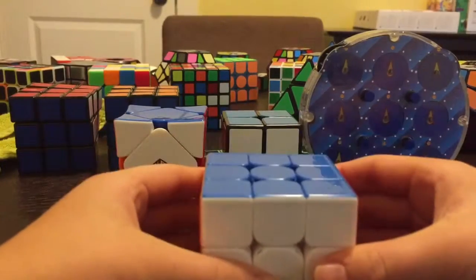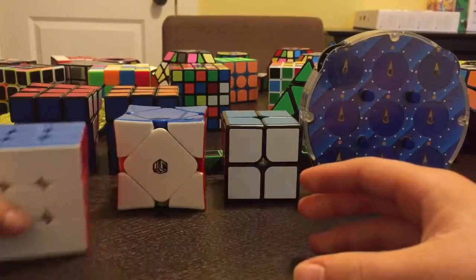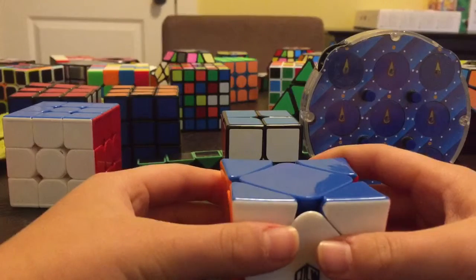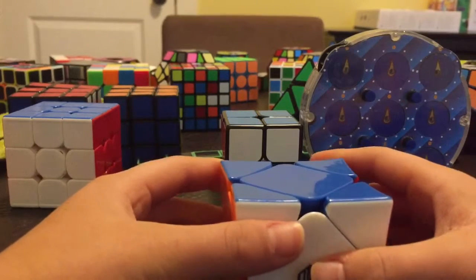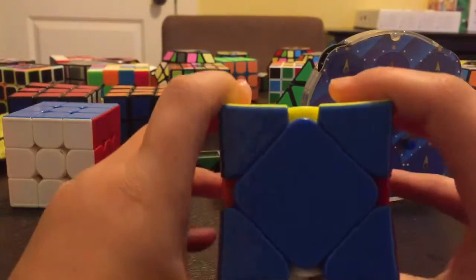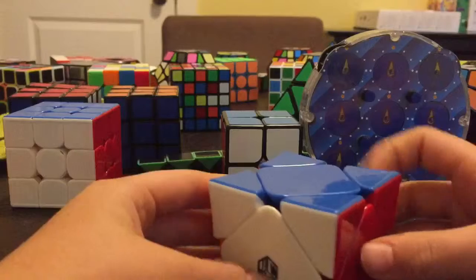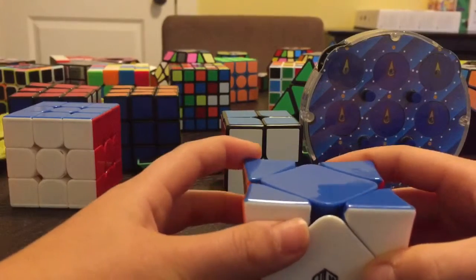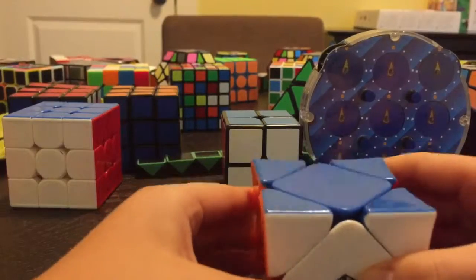Yeah, so for square-1, my current PR single is 13.09, so I think anything sub-12 for single and for average I would really like to get a sub-20 square-1 average.